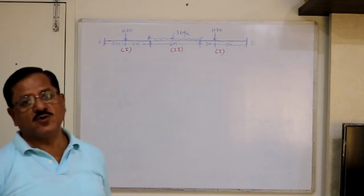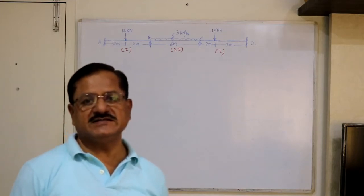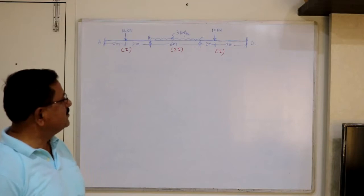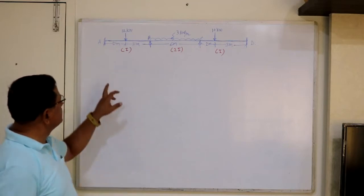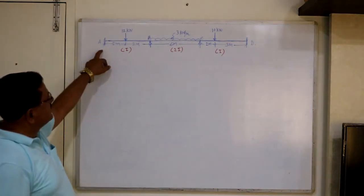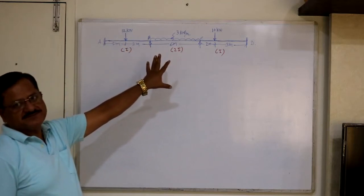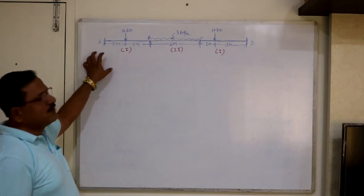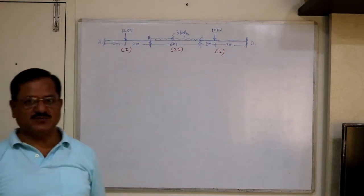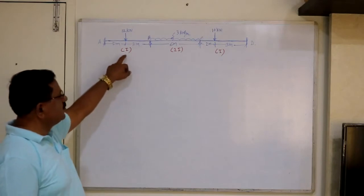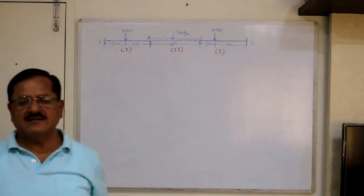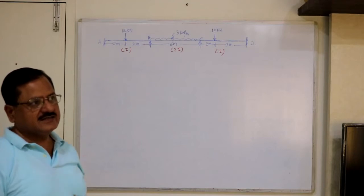We have also seen a list of formulas for fixed end moments — how to calculate the fixed end moment, because that is one of the key steps when solving problems by the moment distribution method. Consider a continuous beam ABCD subjected to loads as shown in the figure. A is fixed, D is fixed, and B and C are continuous supports. The moment of inertia is given as I, 2I, and I for the three spans respectively.